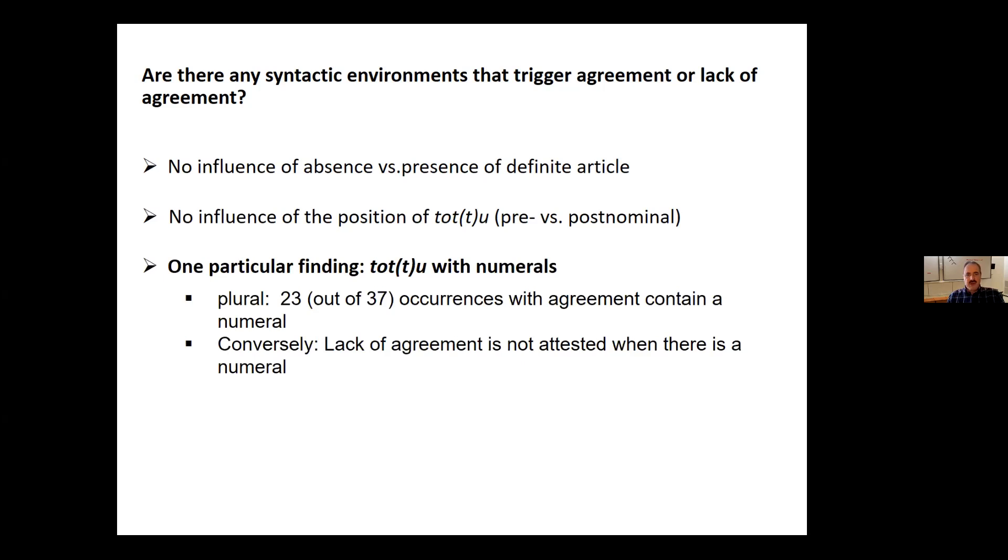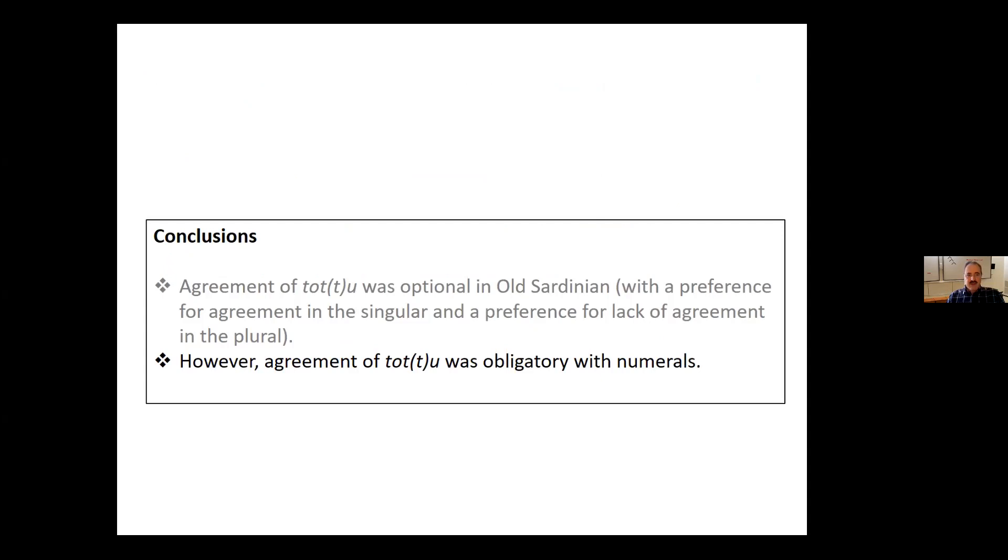Now, there is one particular finding which is TOTTO with numerals. And in particular, out of the 37 occurrences in the plural, 23 contain a numeral. And conversely, the lack of agreement is not attested whenever there is a numeral in the structure. So we add this to our conclusions. Agreement of TOTTO was obligatory in Old Sardinian with numerals.